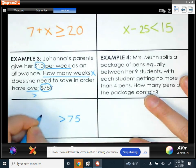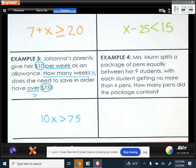And like I said, we would multiply 10 times the number of weeks, which is x, to figure out how much she has saved. So 10x has to be greater than 75.